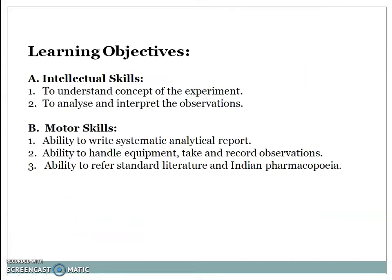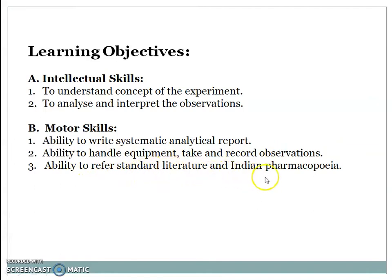Now let's study the learning objectives. First, intellectual skill: to understand the concept of the experiment, to analyze and interpret the observation. Motor skill: ability to write a systematic analytical report, ability to handle equipment, take and record observations, and ability to refer to standard literature and the Indian Pharmacopoeia.